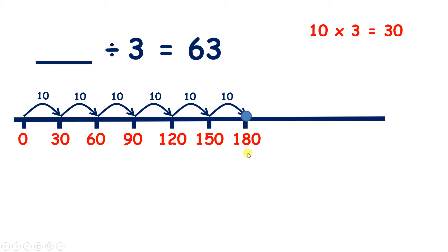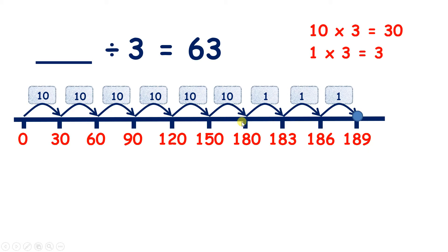180. So 60 threes takes us to 180, and now if we count on another 3 threes, we have 183, 186, 189. So we've counted on 63 steps of 3 to get 189.